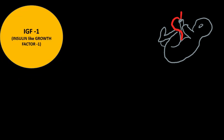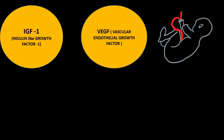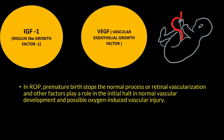In premature infants, two main factors are responsible for vessel development: insulin-like growth factor 1 (IGF-1) and vascular endothelial growth factor (VEGF). When babies are born prematurely, these factors are not present at their maximum potential, which stops the normal process of retinal vascularization. Additionally, oxygen-induced injury further halts the initial normal vascular development in these babies.